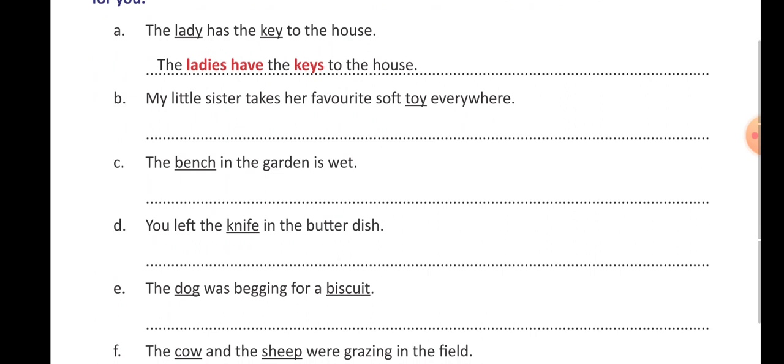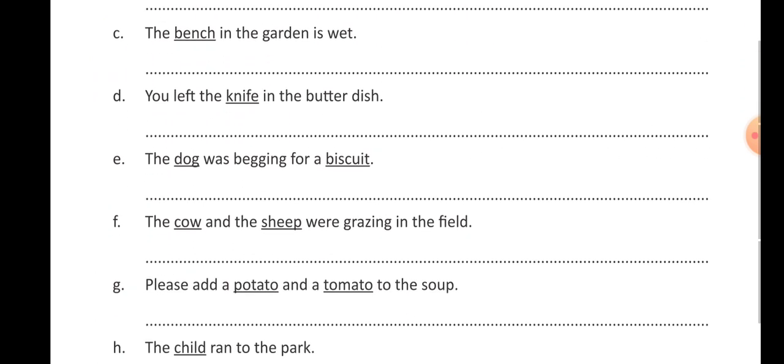D number: you left the knives — K-N-I-V-E-S — knives in the butter dish. E number: the dogs — D-O-G-S — were — W-E-R-E — begging for biscuits — B-I-S-C-U-I-T-S. The plural change will occur in biscuits.